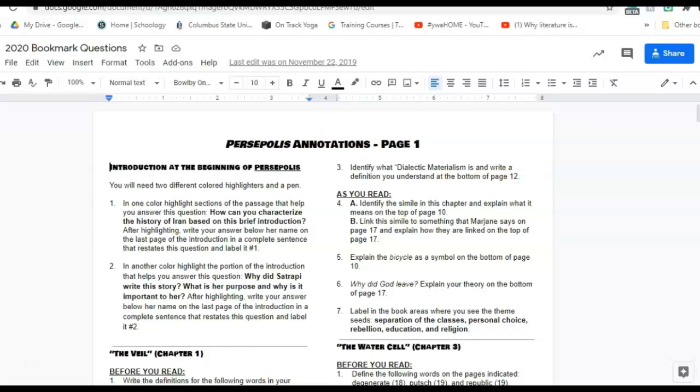So the annotations for this book are very very specific. For the introduction, which will be your first assignment, you'll need two different colored highlighters and a pen. It specifically tells you in one color highlight the sections in the passage that help you answer this question. It asks you, after highlighting write your answer below her name on the last page of the introduction in a complete sentence and label it number one.